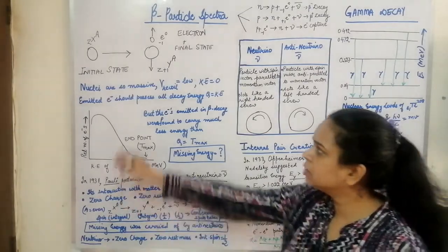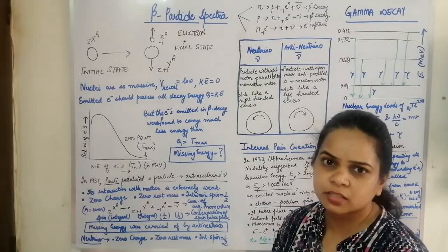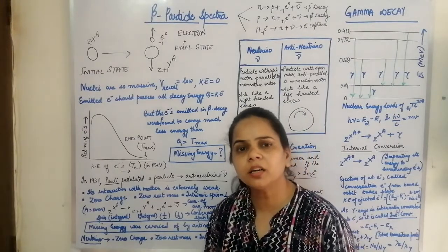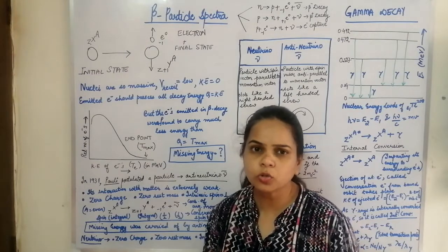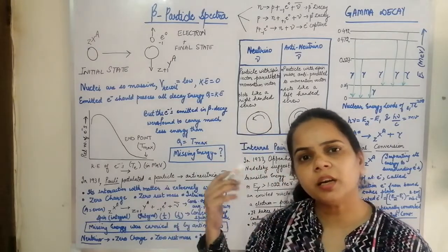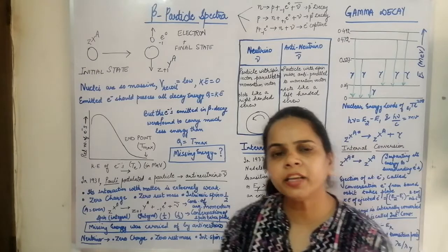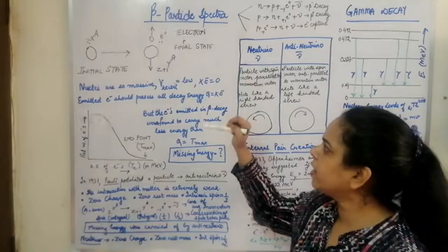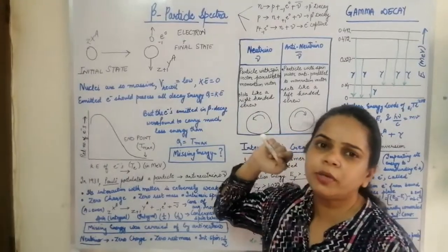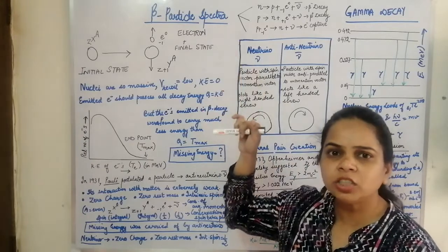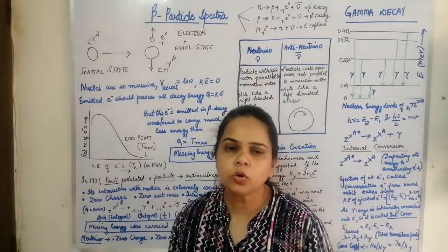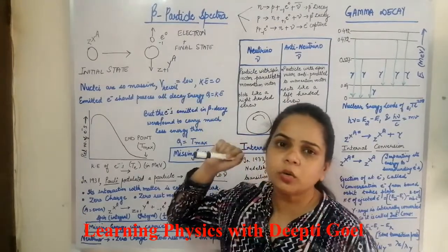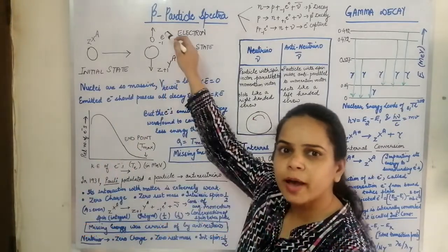The initial state of the parent atom was at rest. Since nuclei are quite massive and heavy, the heavy particle will have the least velocity — high mass means lower velocity. So if a nucleus is very heavy with low velocity, it will possess practically negligible kinetic energy, approximately zero. Therefore the whole kinetic energy will be transferred to the electron.